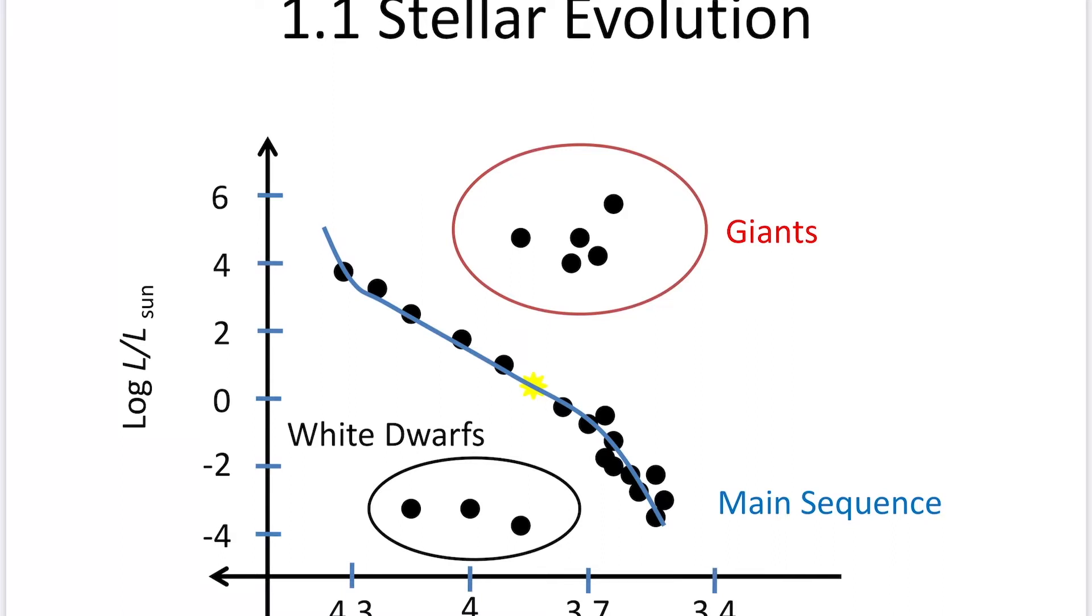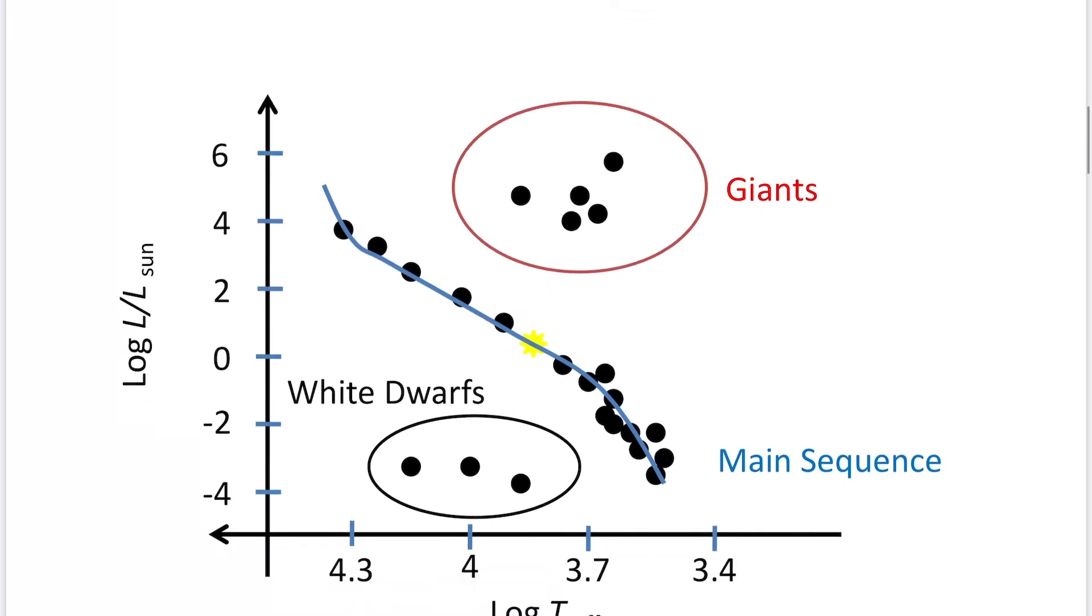Giants are located in the upper right corner. White dwarfs are located in the lower left corner. Majority of stars belong to the main sequence located in the middle. So there are three types of stars: giant, main sequence, white dwarf.